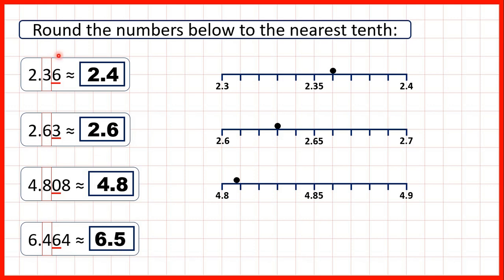And also rounding to the nearest tenth and rounding to one decimal place they mean the same thing. Whether we're rounding to the nearest tenth or to one decimal place we only have one digit after the decimal point.